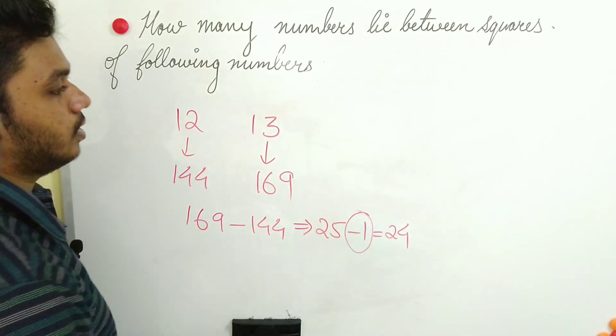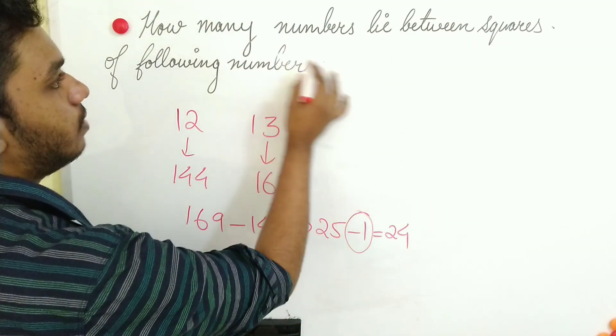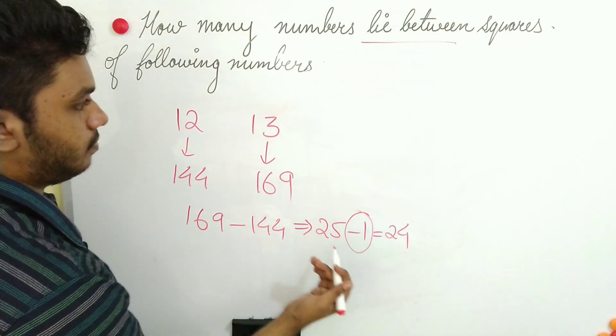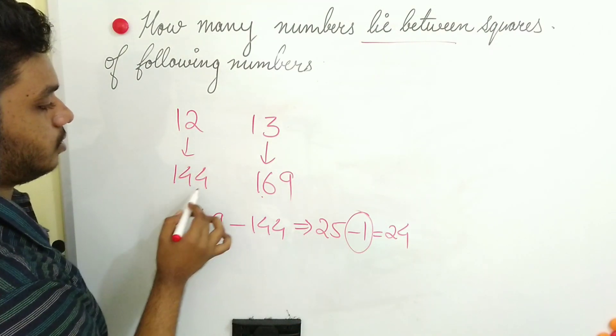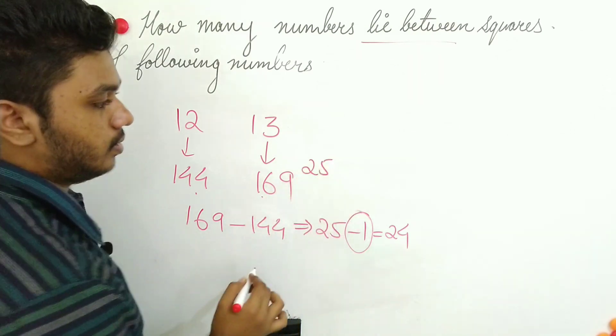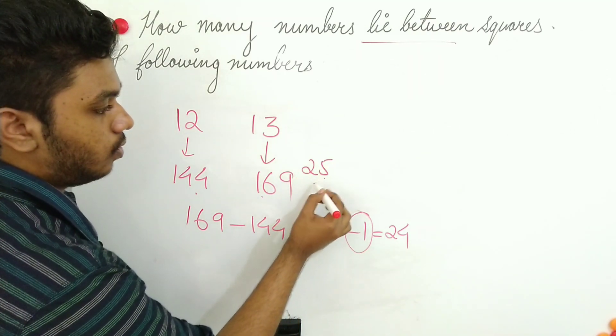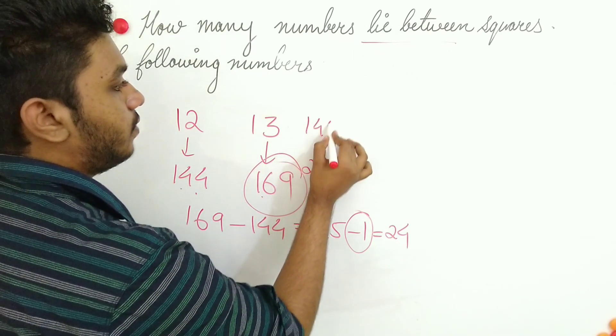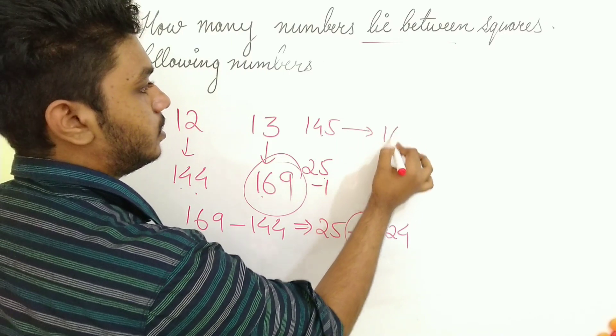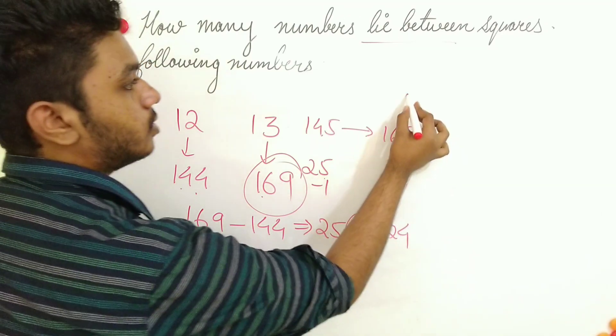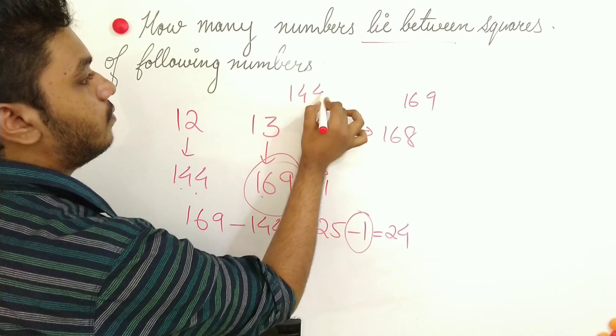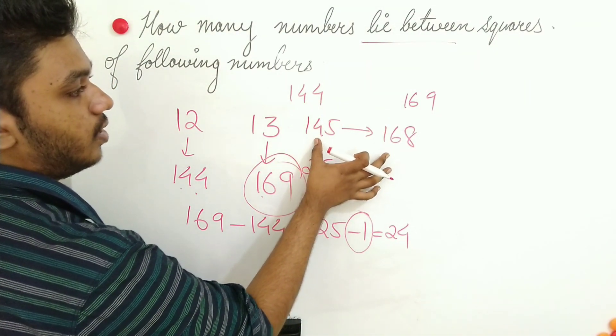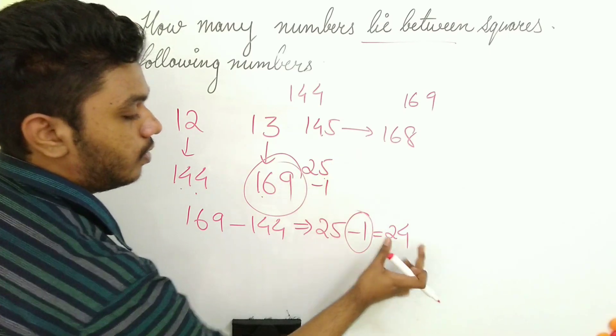Why I should do this minus 1? Since they are asking how many numbers are lying between these two numbers, I should exclude 1. That means if I subtract these 2, I am getting 25 numbers, but I should exclude 1 since I don't want 169. I have to take from 145 to 168. I have to exclude 169 as well as 144. Between what are the numbers? 145 to 168. There are 24 numbers.